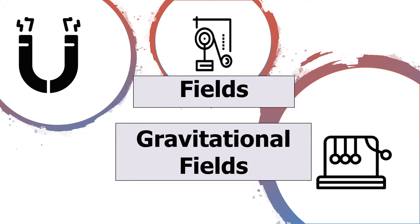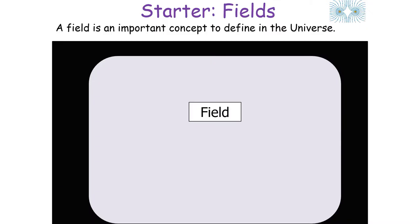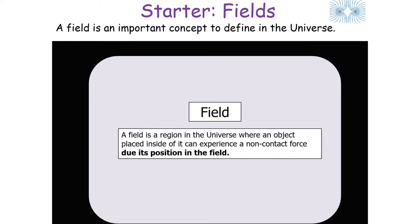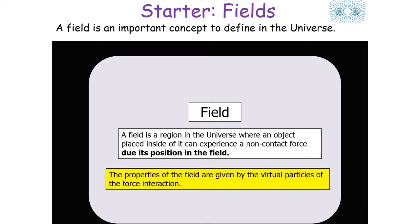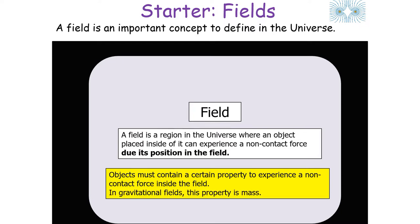The first topic is the general definition of any field in physics. A field is a region in the universe where an object placed inside of it can experience a non-contact force due to its position in the field. The properties of the field are given by the virtual particles of the force interaction, whether that be the electromagnetic or gravitational interaction. Objects must contain a certain property to experience a non-contact force — in gravitational fields this property is mass, whilst in electrical fields it is charge.